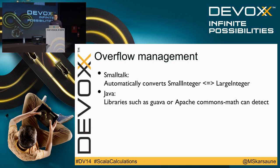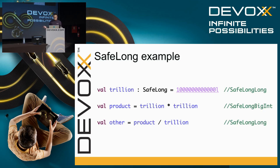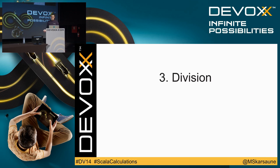In Smalltalk we didn't have this problem because you had small integer and large integer, and the VM would ensure the result was sufficient to hold the value. In Java you have some libraries, but in the VM as such there is no support for it. Spire has a type called SafeLong. The SafeLong is able to detect overflow and ensure an optimal representation. If I start with a trillion assigned to a SafeLong, it will be an instance of SafeLongLong. But if I multiply that by itself, the result will be a SafeLongBigInt. And if I then divide it by something that fits into a long, the result will be SafeLongLong again. So you can use this without having to worry about overflow.